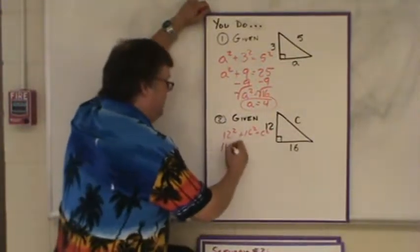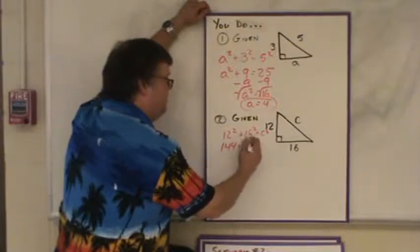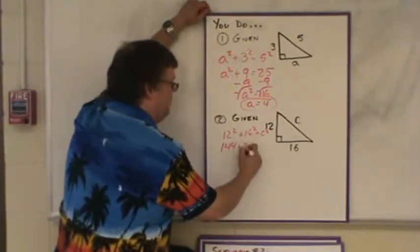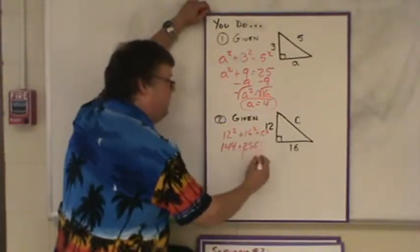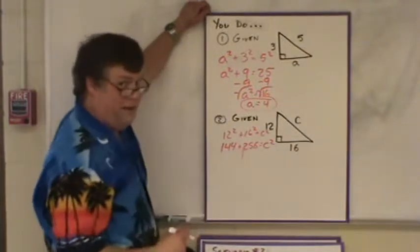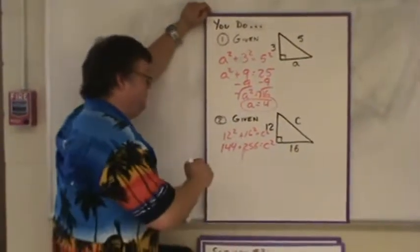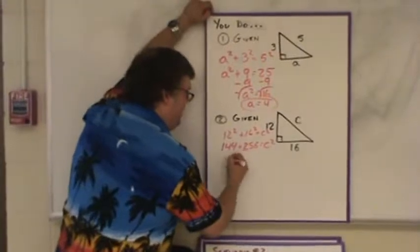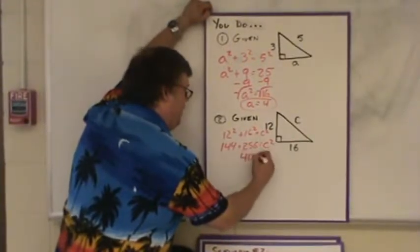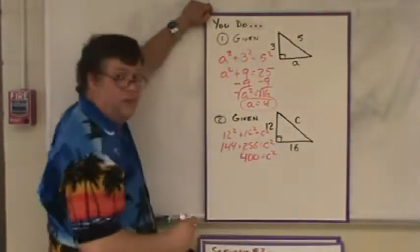12 squared is 144. 16 squared is 256. Don't worry, you can use your calculator to do that. Add them together, and you're going to get 400 equals c squared.